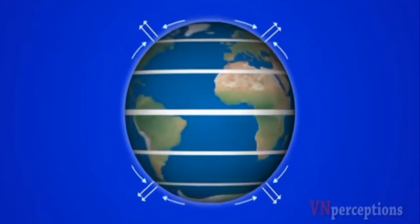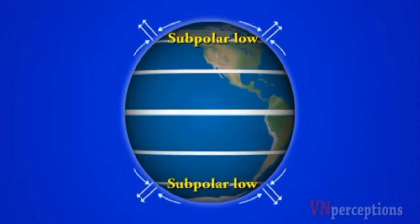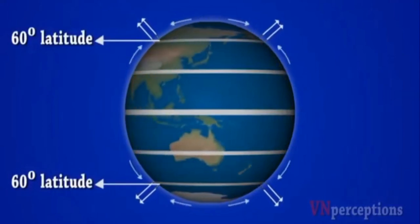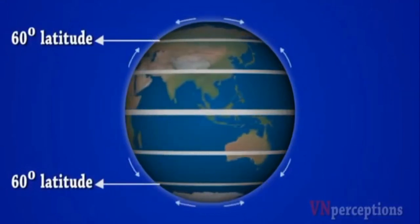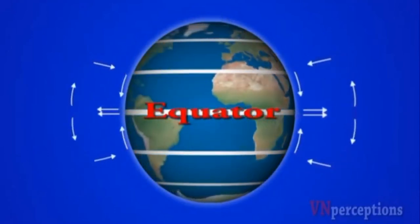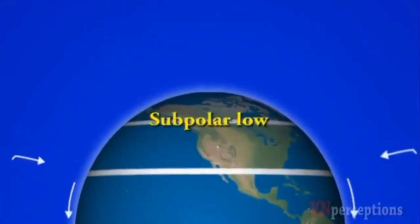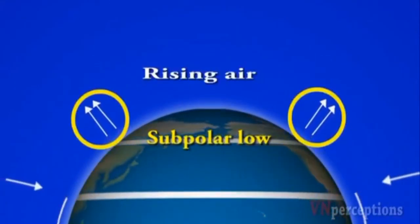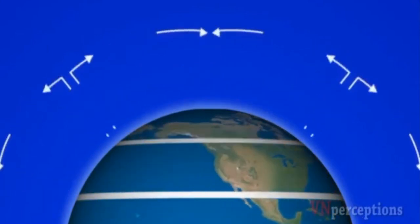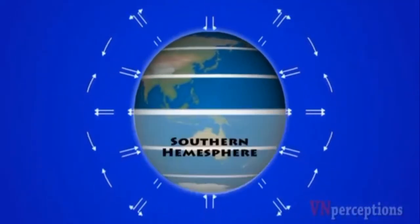At the poles, sun rays are very much inclined, so cold air sinks — these regions are known as polar highs. In the northern hemisphere, air moves towards the south, and in the southern hemisphere, air moves towards the north. At around 60 degrees, air coming from the north and south converges and rises up — these regions are known as subpolar lows. The same things happen in the southern hemisphere.